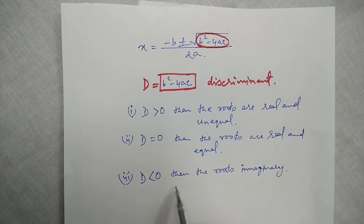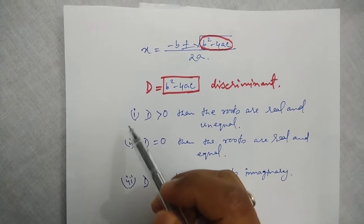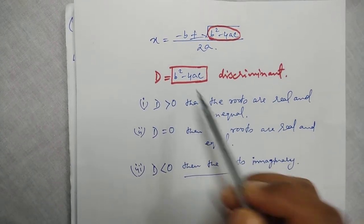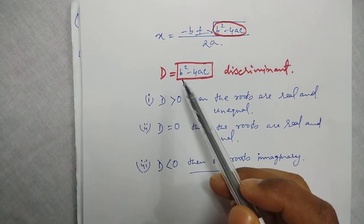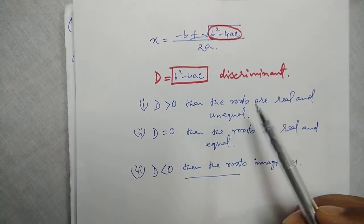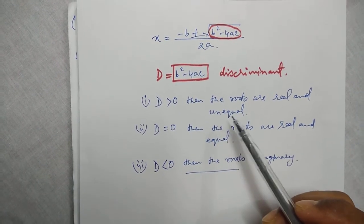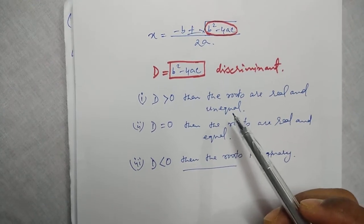So, without solving a quadratic equation, with the help of this discriminant, we can tell the nature of the roots as real and unequal, or real and equal.